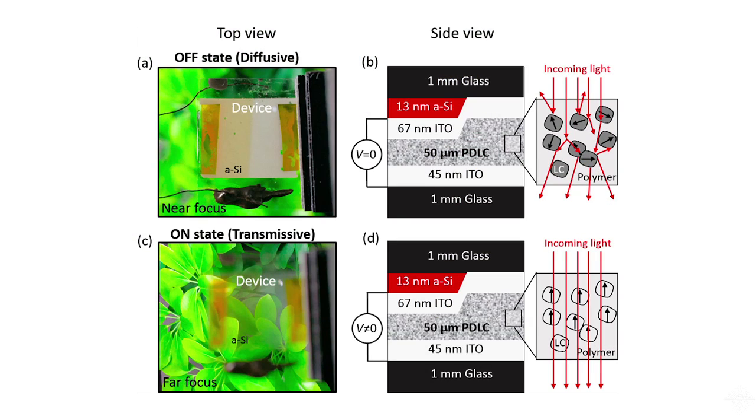Jeremy Munday and colleagues at the University of Maryland at College Park created the window by taking a polymer matrix containing microdroplets of liquid crystal materials and an amorphous silicon layer, the type often used in solar cells, and sandwich them between two glass panes.